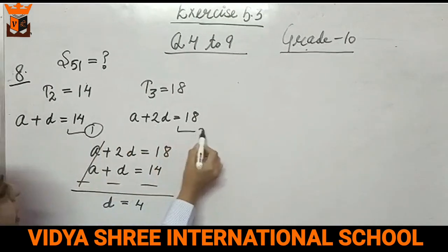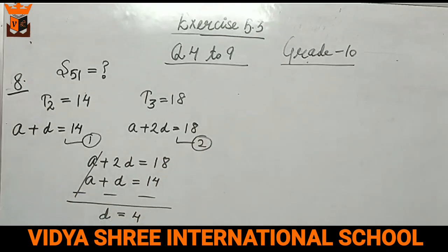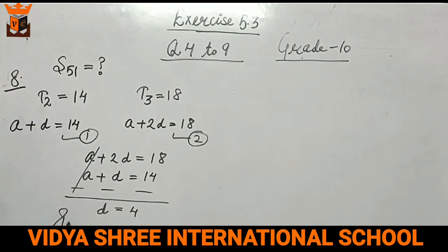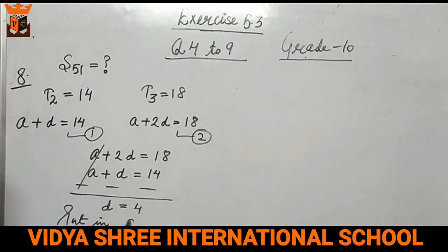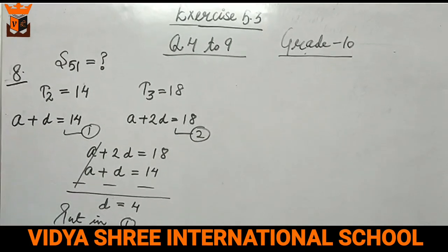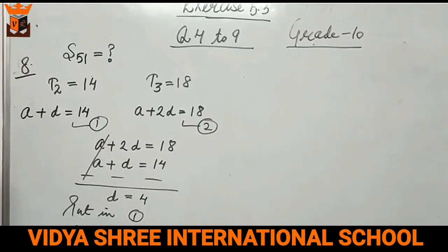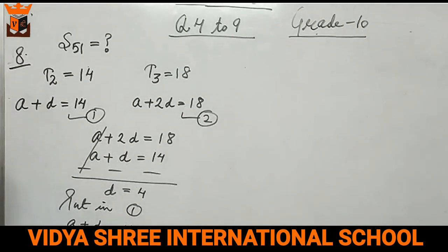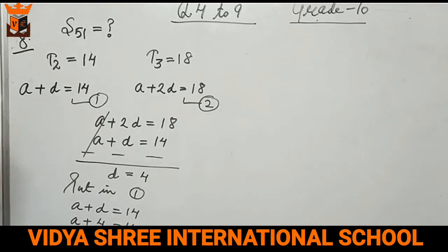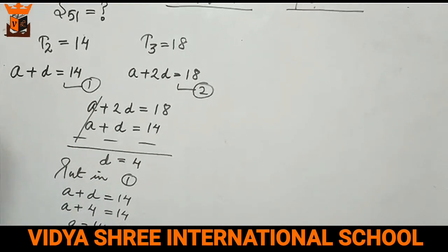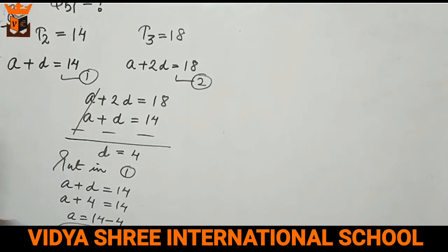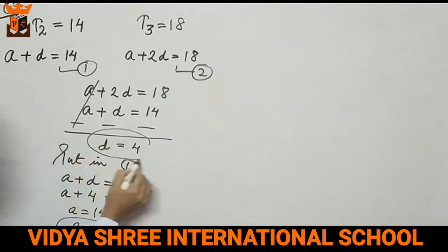We can replace this in any equation to find the value of a. Let's put it in equation number 1. So a plus d equals 14. d is 4. So the value of a is 14 minus 4, which is 10. This is the value of a, and this is the value of d.